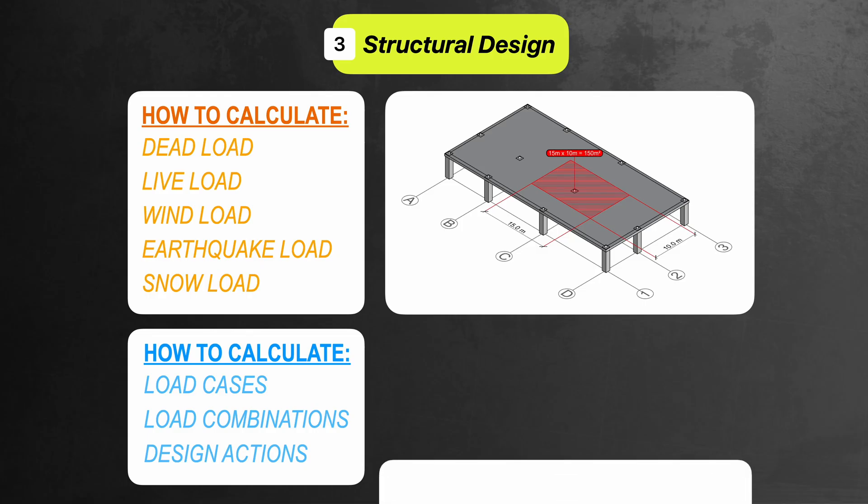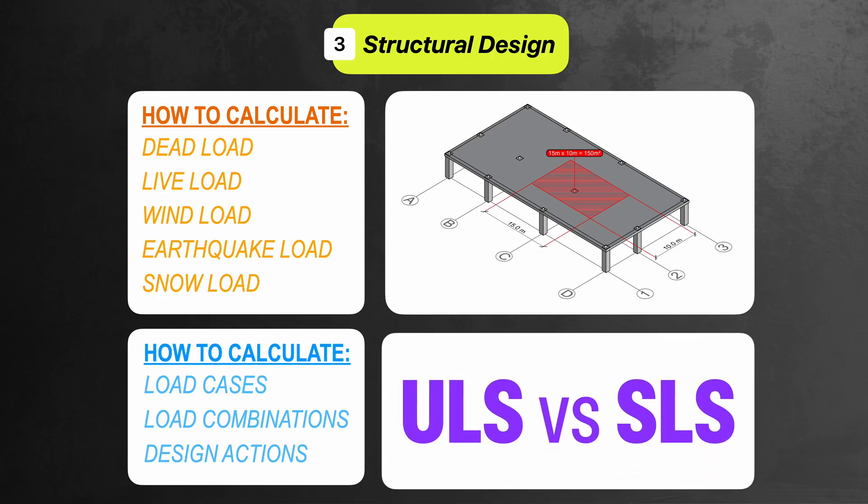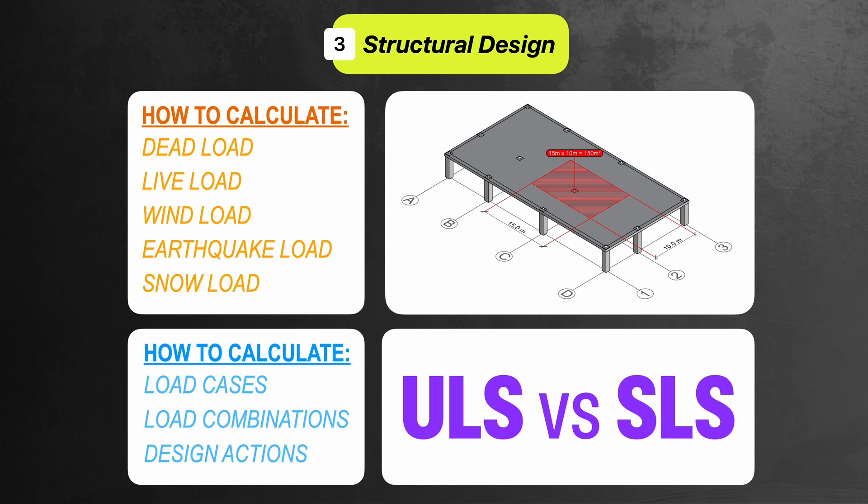One more thing you'll get introduced to here is ultimate limit state design and serviceability limit state design. The first is about strength, and the second is about usability — things like deflection, vibration or cracking that might not cause failure but still affect performance. This is one of those procedures that structural engineers do daily, so while it may all sound confusing at first, after you've done it a couple of times you'll start to get the hang of how it all comes together.